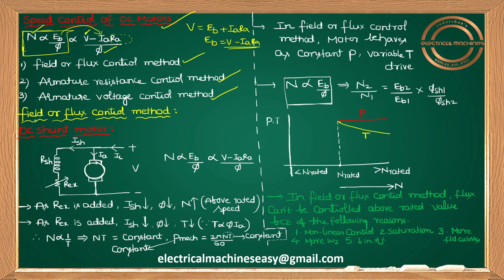I'll discuss the field or flux control method, first for the DC shunt motor, then for the DC series motor. Generally, the DC shunt motor is called a constant flux machine because Ish equals V/Rsh, and as long as supply voltage is constant, Ish is constant. However, in this method, you should not call it a constant flux machine.